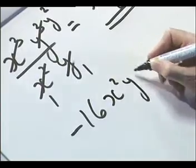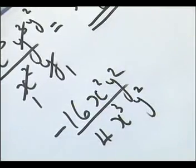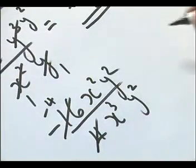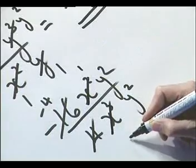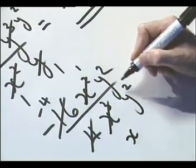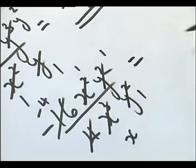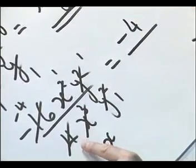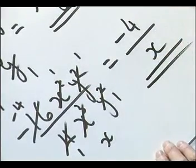We can also involve numbers. Take minus 16x squared y squared over 4x cubed y squared. 4 goes into minus 16 minus 4 times. x squared on top and x cubed underneath: x squared into x squared goes once, x squared into x cubed goes x times. y squared is the same top and bottom, so it cancels to 1. We end up with minus 4 times 1 times 1 over 1 times x times 1, giving minus 4 over x.